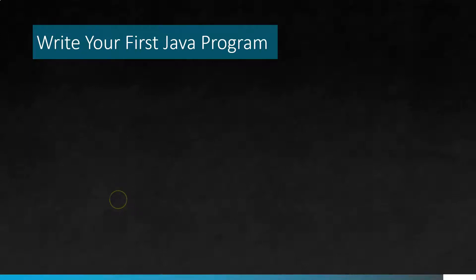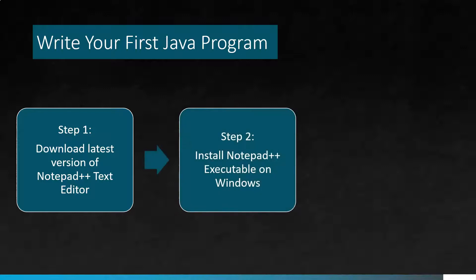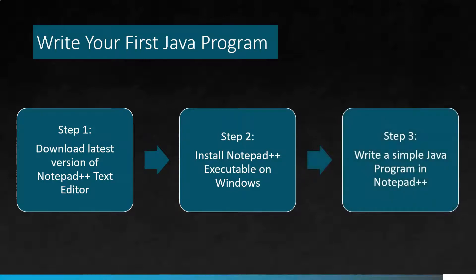Now let's see how we can write our first Java program on a text editor. For this we'll have three steps. First we'll download the latest version of Notepad++, which is a text editor on the Windows machine. Then we'll install Notepad++ on the Windows machine. And finally we'll write a simple Java program in Notepad++ which will print Hello World on the console.